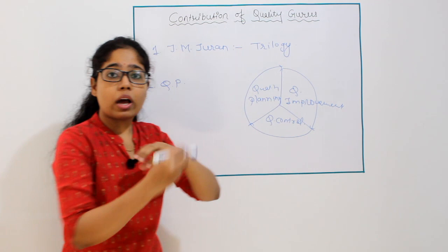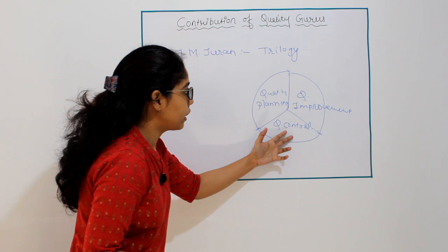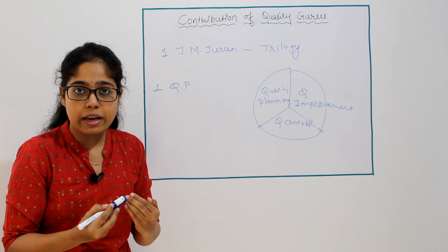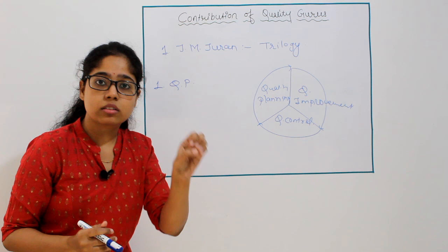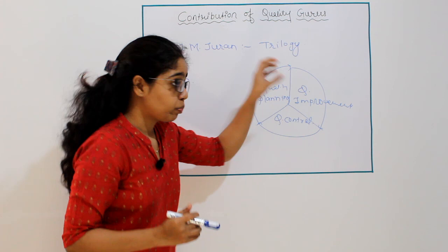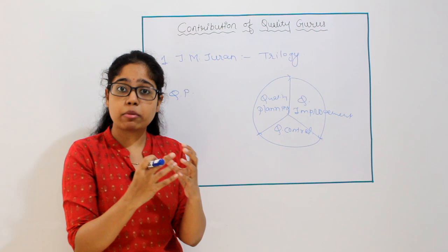You then relaunch the improved product. For quality control, after relaunching the improved product, you again receive customer feedback. If customers are satisfied with the improved product, that means you have controlled the quality — so this is quality control, where customer satisfaction with the improved product confirms quality has been controlled.